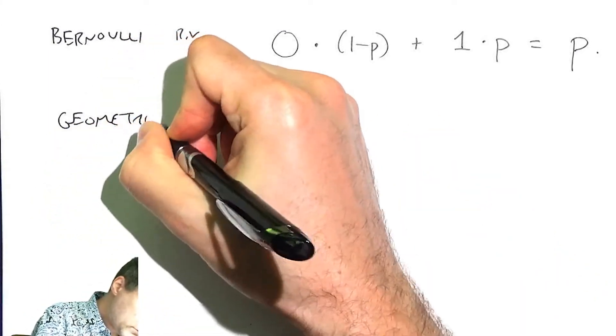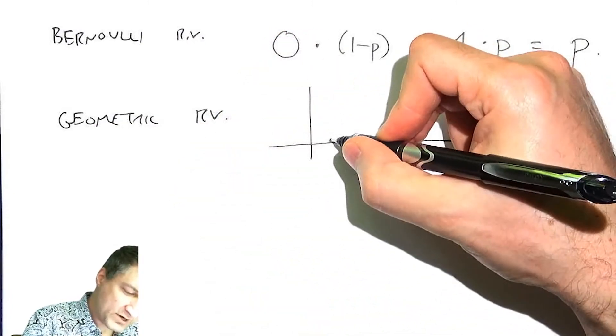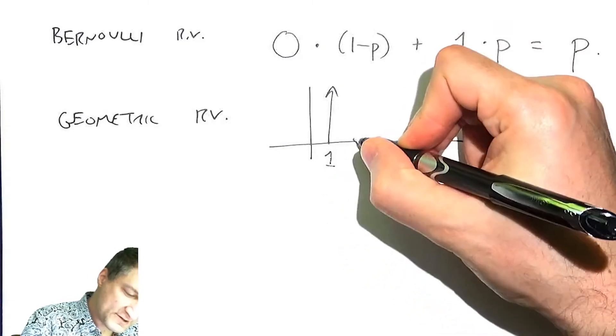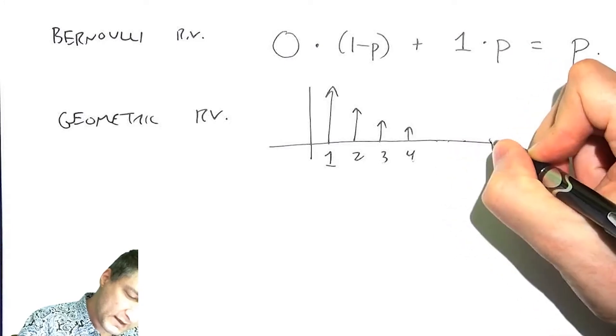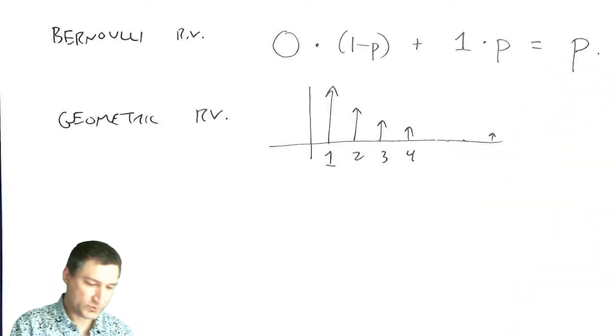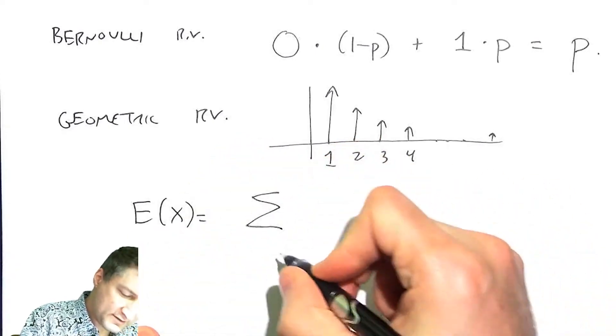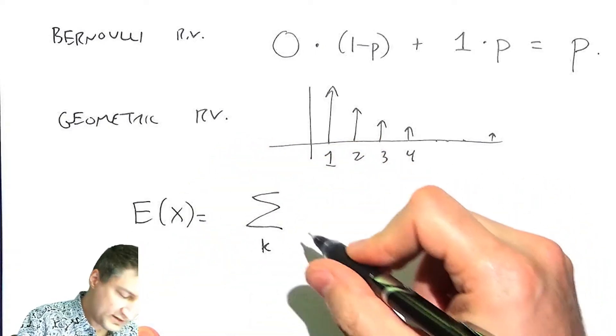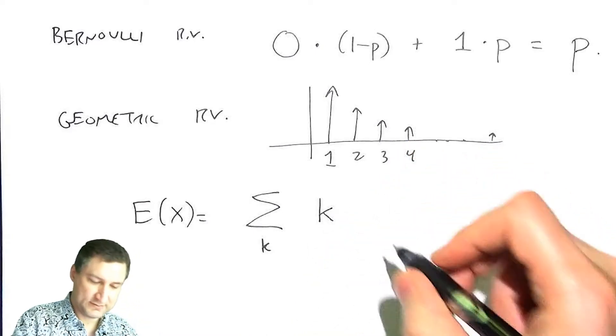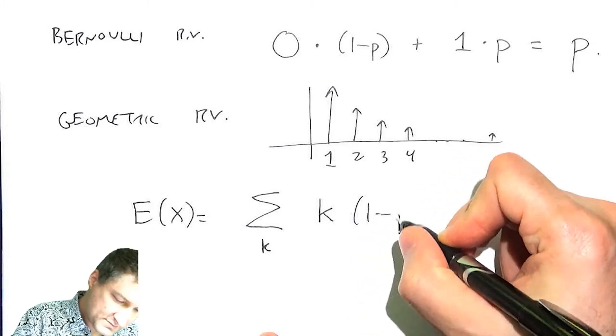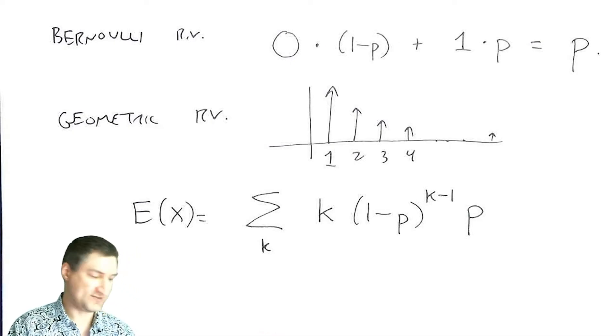The geometric random variable, this is the one where, again, it looks like I have a probability of succeeding on the first try, on the second try, on the third try, and so on. So my arrows go on forever, but they get smaller and smaller, so they add up to one. So what is my expected value there? Well, it's the probability of getting the value k and that means I have 1 minus p to the k minus 1 failures and 1 success.